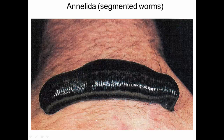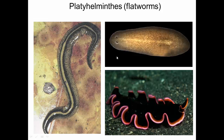Annelids are segmented worms — here's a leech drinking some blood from someone's arm. Earthworms are also annelids. And then platyhelminthes, or flatworms, or flukes — this is a planaria here, and this is a disease-causing fluke. But there are also a number of marine platyhelminthes that swim around and can often look a lot like nudibranchs. If you're a marine biologist in some parts of the ocean, sometimes it's actually difficult to even tell what phylum you're looking at when you see something like this swim along.